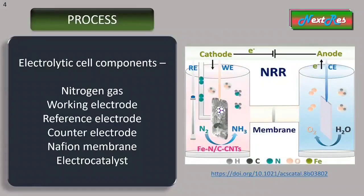Coming to the NRR process. In the electrochemical nitrogen reduction reaction process, nitrogen gas is electrochemically reduced to ammonia or other nitrogen-containing compounds. The reaction occurs at the cathode of an electrochemical cell, which acts as the site of the reaction. Some primary components of the electrochemical cell are shown in the slide.